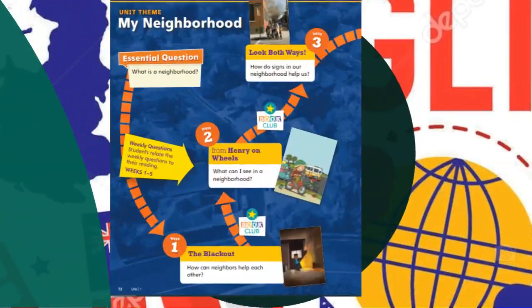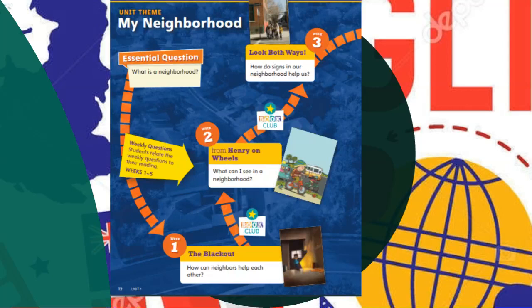This is a roadmap for the first unit, or the first theme, which is 'My Neighborhood.' The essential question for the unit is: what is a neighborhood? In this unit we will be introduced to different texts and different genres like realistic fiction and informational text. The first story we will read is 'The Blackout,' and its essential question is: how can neighbors help each other?